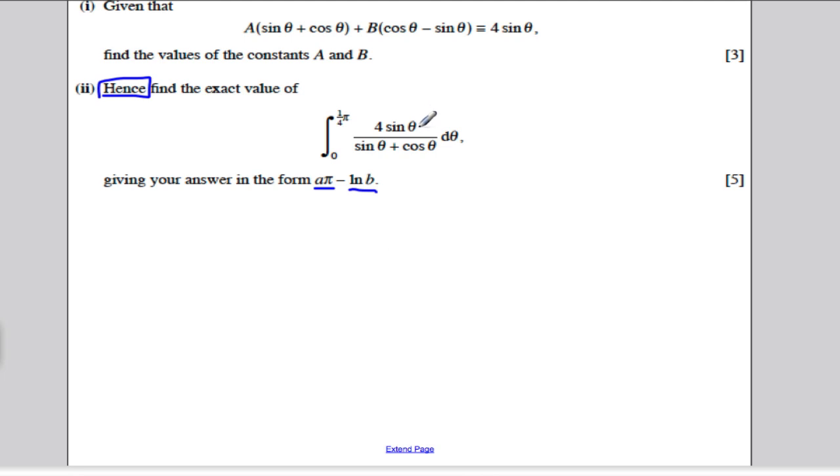Well, what we could say is the top here, we know the top, 4 sine theta, can be written in that form there, where A is the number 2 we've already found and B is the number negative 2. So if I call this integral, let's say, I,